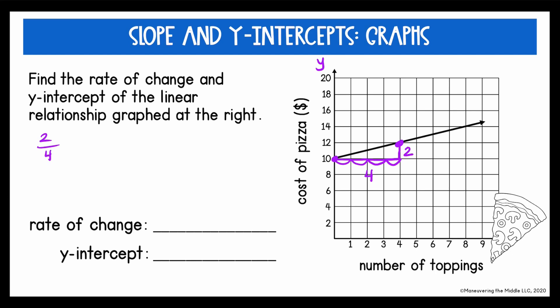When I set up this ratio for the rate of change, two over four or one over two, because we have units here, dollars per topping, I'm going to change this from a fraction to a decimal because it makes more sense in the context of the situation. So we would say the rate of change is 50 cents per topping. And then the y-intercept is here where it touches the y-axis or when x is equal to zero, y is right there at $10.